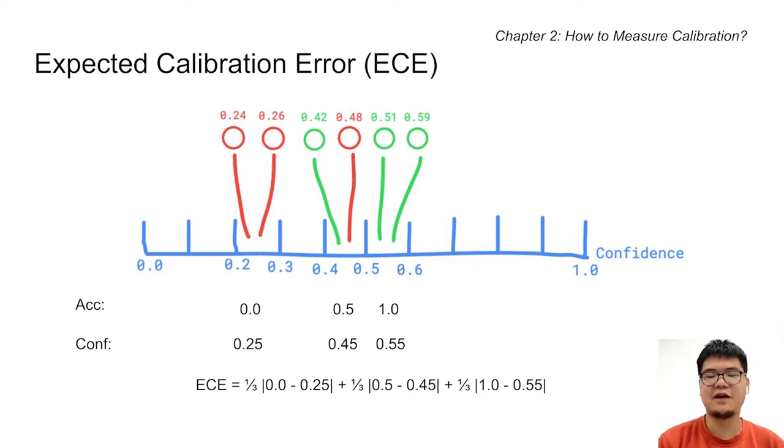Then, we compute the difference between the average accuracy and the average confidence of each bucket. We then take the weighted average across all buckets as the ECE.